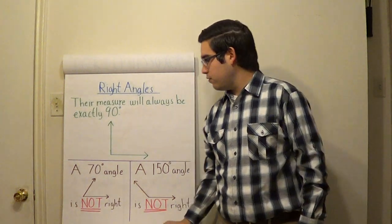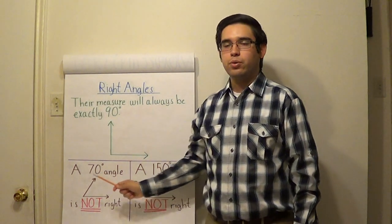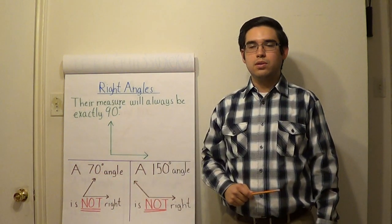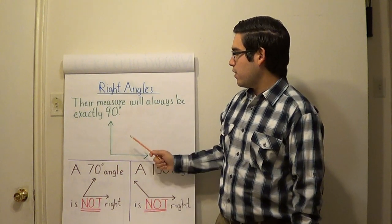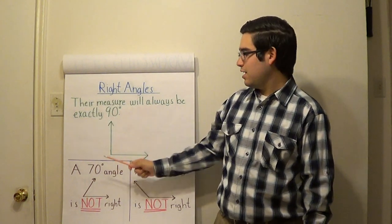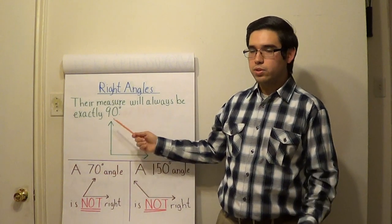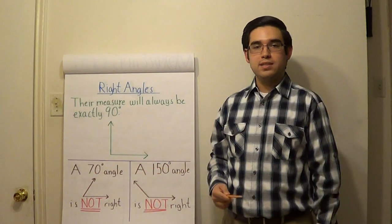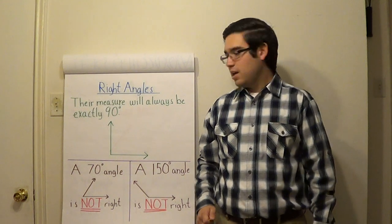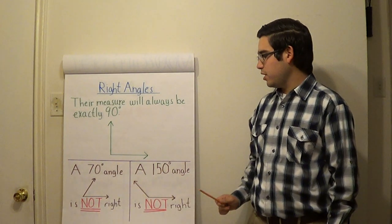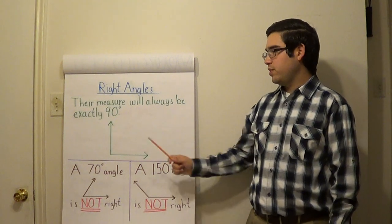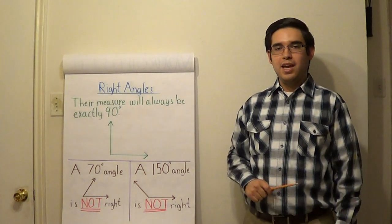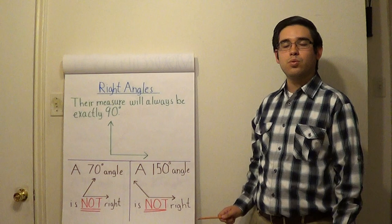Let's consider a few examples. Let's say we had a 70 degree angle — is that a right angle? In order for it to be a right angle, it has to be exactly 90 degrees. Is 70 equal to 90? Of course not, so it's not a right angle. Let's also consider an angle of 150 degrees. Is 150 equal to 90? No, so it is also not a right angle.